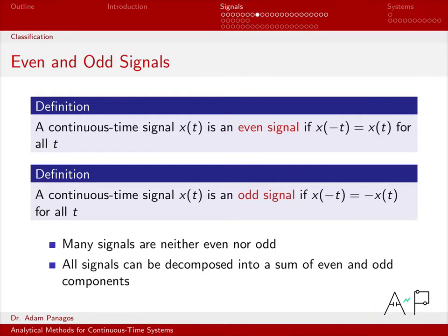Odd signals are very similar, but just with a negative sign. They don't have the same value at negative time — they have the negative of the value or amplitude at negative time. So picking a concrete example, x at time 2 is the negative of x at time minus 2. Odd signals have been flipped in amplitude about the time origin.